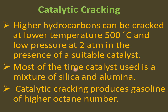The most commonly used catalysts are silica (SiO₂) and aluminium oxide (Al₂O₃). A mixture of silica and aluminium oxide is mostly used in catalytic cracking. This is the best type of cracking used in the petroleum industry — it produces gasoline of higher octane number with fewer unsaturated hydrocarbons. So catalytic cracking is better than thermal cracking.